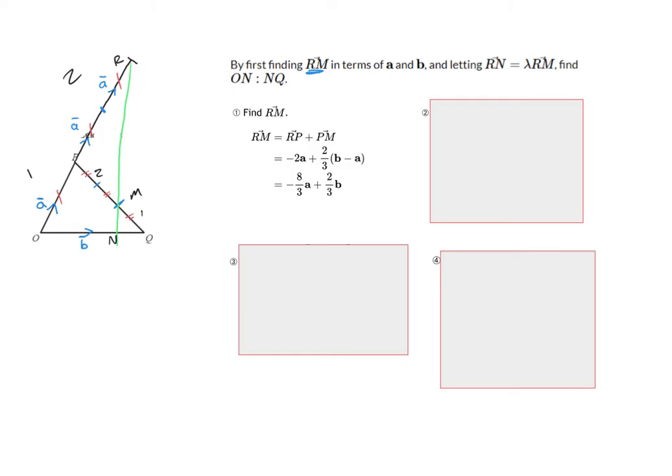So here we've worked out the vector that takes us from R to M. And what we're trying to work out is this expression here. O to N, and a ratio of N to Q. So, we need to work out how to get from here to here. Now, we know it is some fraction of vector b.